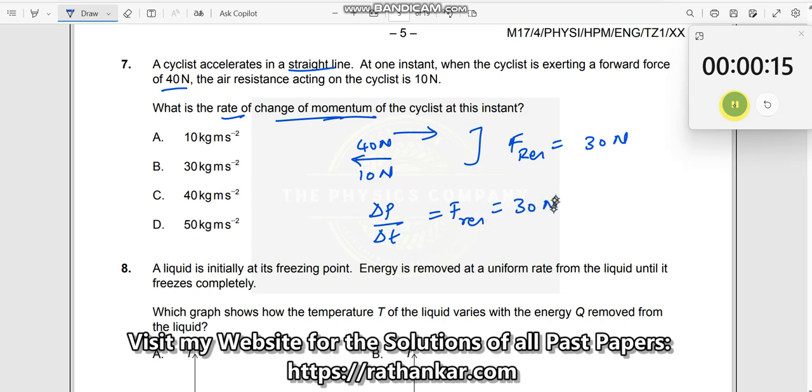So what is the answer? 30 newtons. But here everything is in kg, so you write this as 30 times kg times meter per second squared. Meter per second squared for acceleration, and for mass, kg meter per second squared. So B is the right answer.